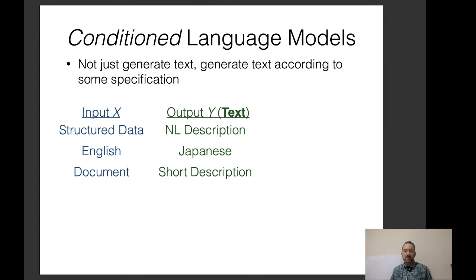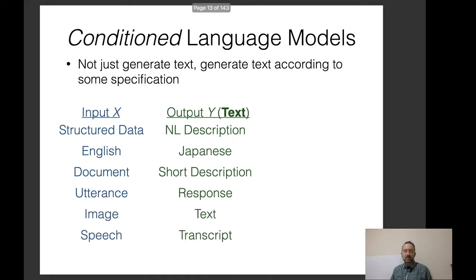The input could be a document and the output a short description. Input could be an utterance, response, image, text, speech, or transcript. All of these inputs are of various varieties, whereas the outputs are normally text.